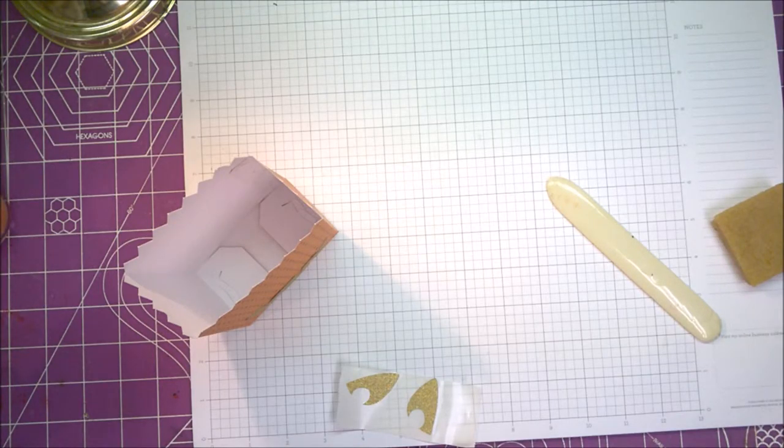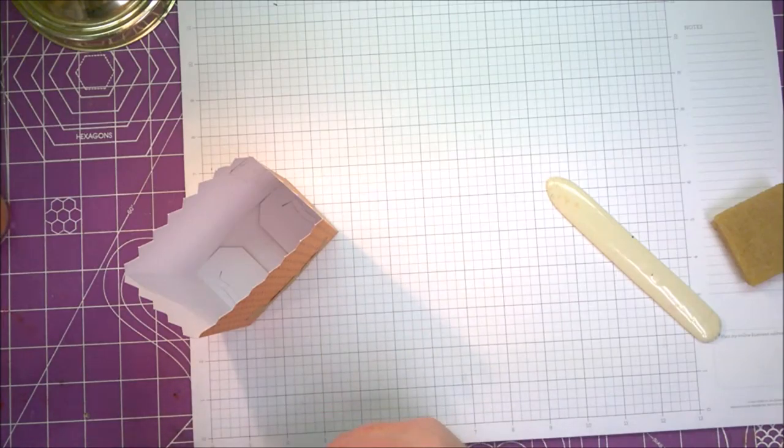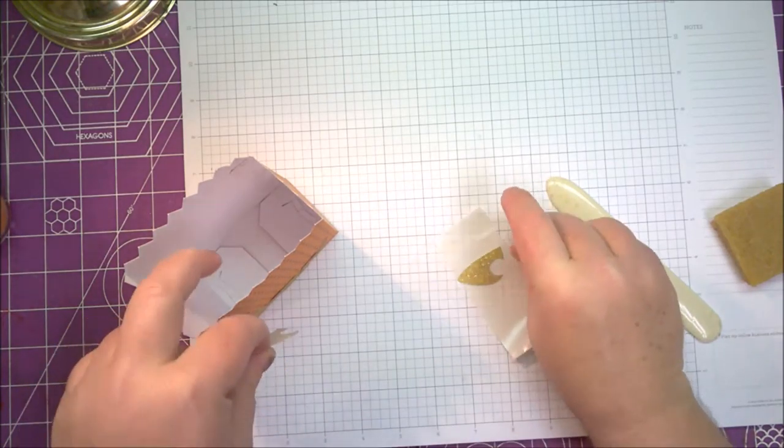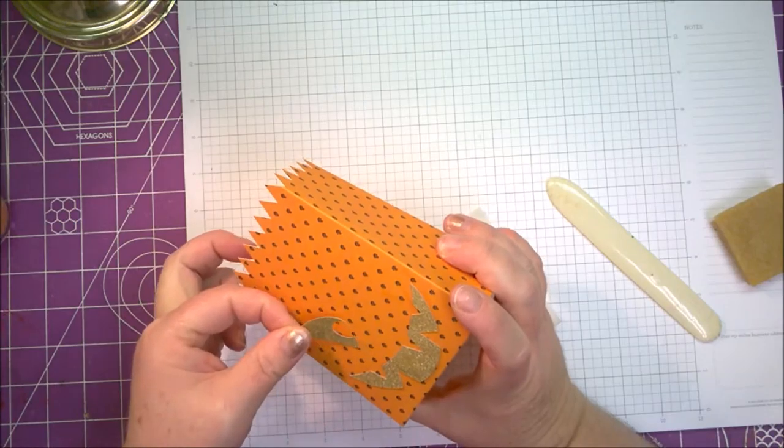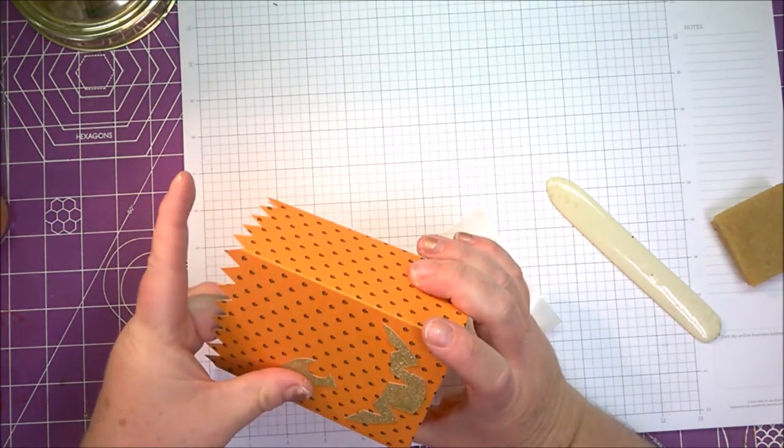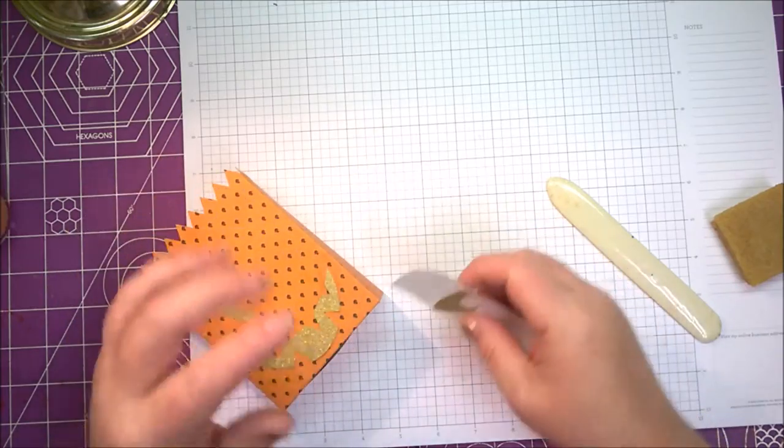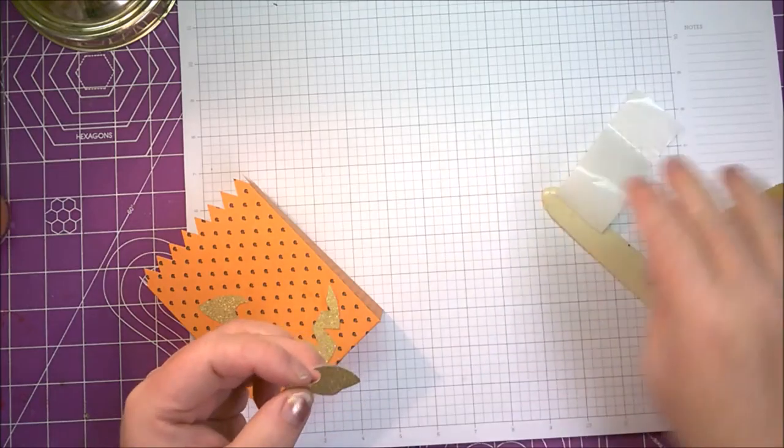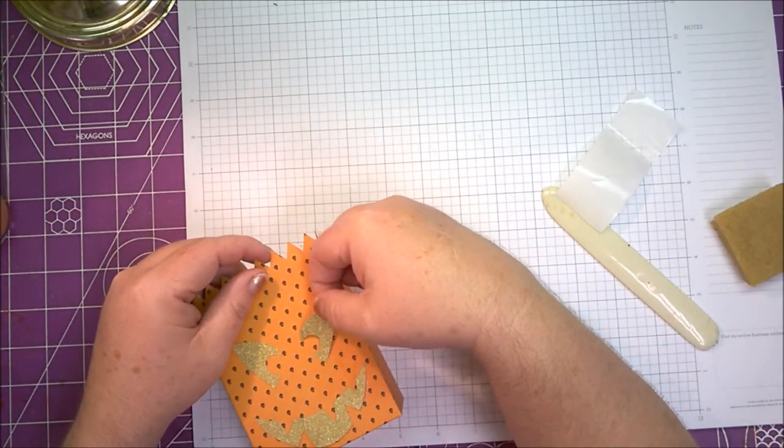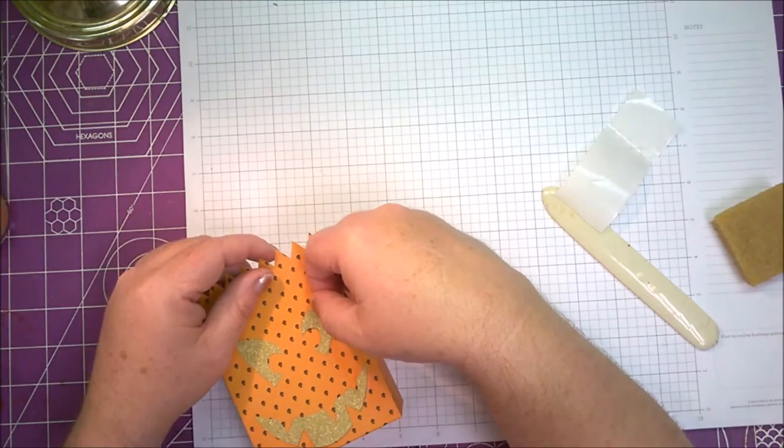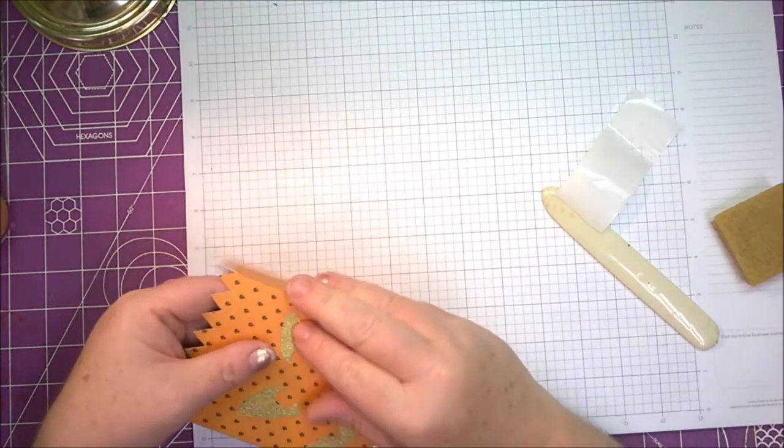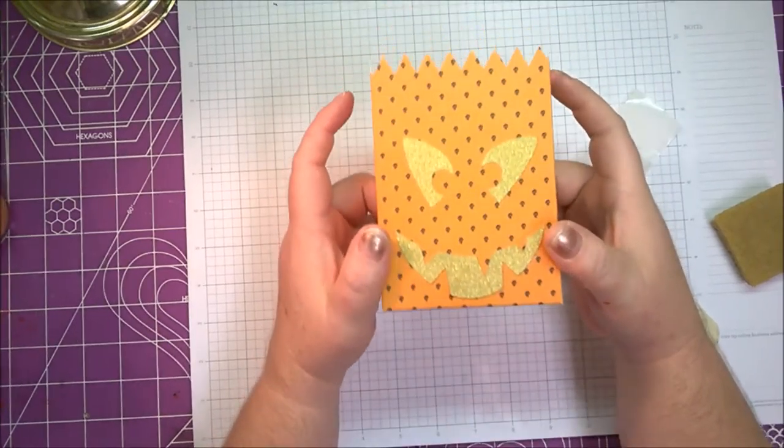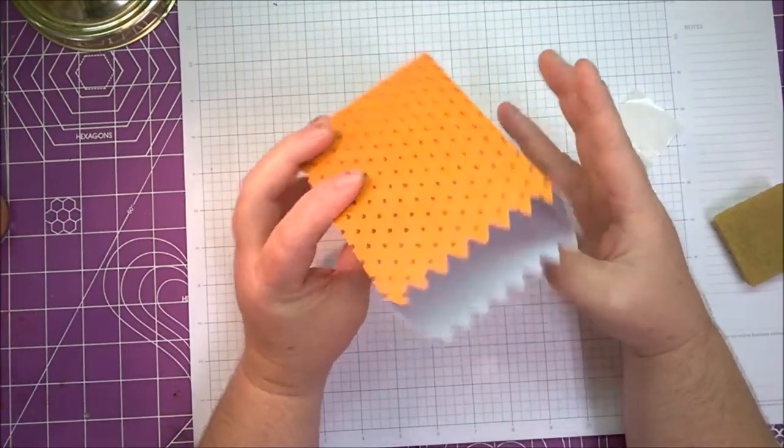Once I realized what I was doing, this was actually really easy. Next time I've got to remember do not score on the other side. That's where the flap is. I think next time I'll also put my mouth through the Xyron too.